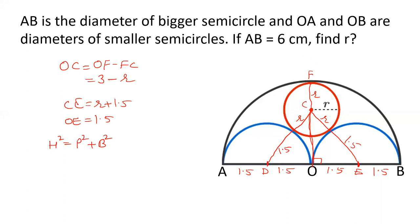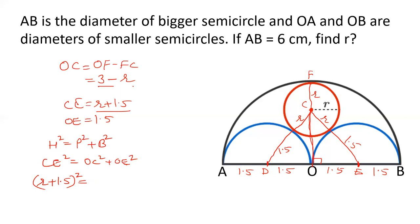Hypotenuse is R plus 1.5. So: CE squared equals OC squared plus OE squared. CE equals R plus 1.5, so we have (R + 1.5) squared equals (3 − R) squared plus (1.5) squared.